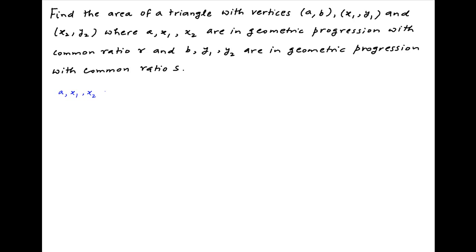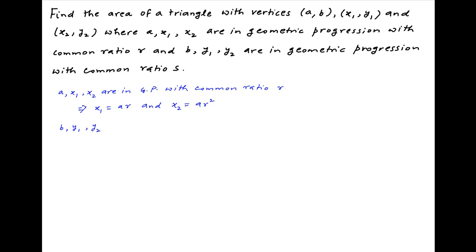We are given that a, x1 and x2 are in geometric progression with a common ratio r. Therefore, x1 is equal to a times r and x2 is equal to a times r squared. Similarly, we are given that b, y1 and y2 are also in geometric progression with common ratio s. Therefore, y1 is equal to b times s and y2 is equal to b times s squared.